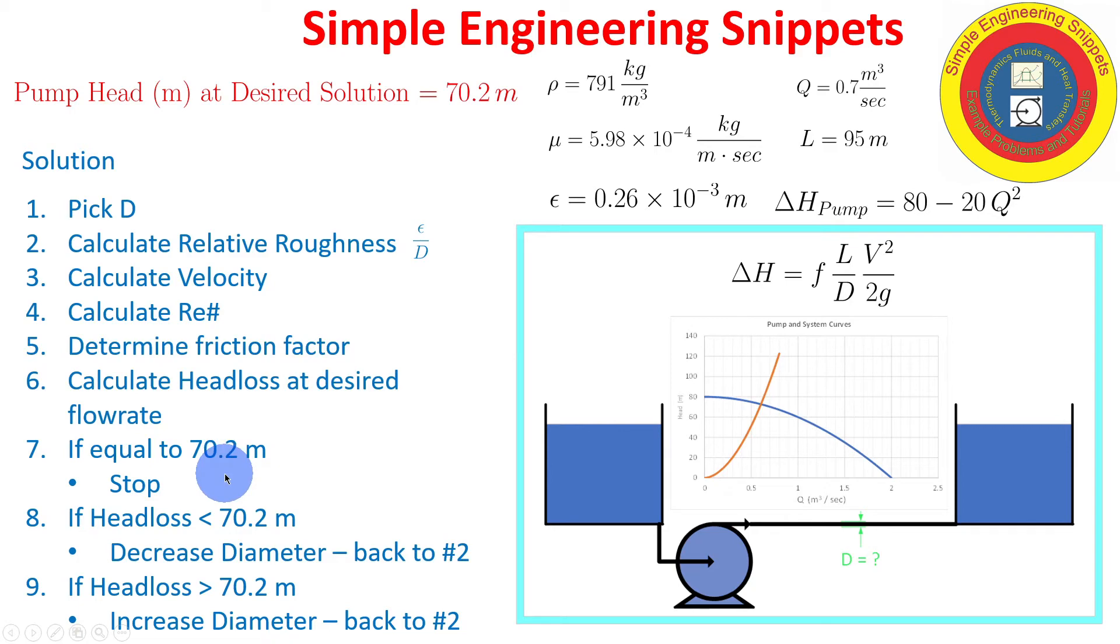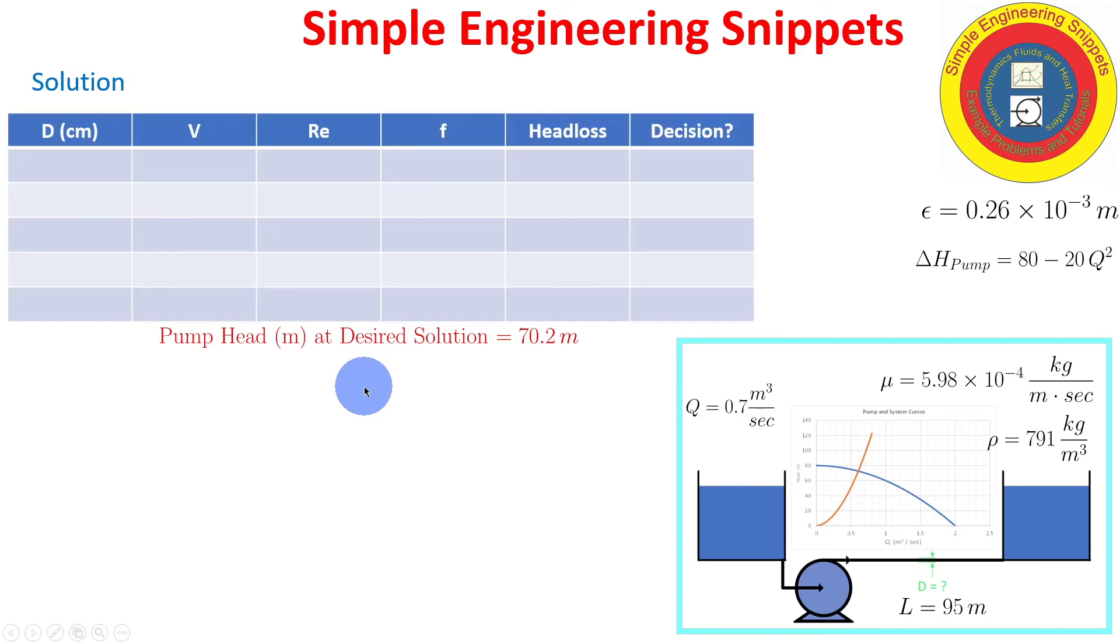You guessed the correct diameter. Way to go. If it's less than 70.2, well that's not terrible because that means our actual solution will be greater than 0.7 cubic meters per second. But that may not be optimal. So we're going to decrease our diameter, go back to number 2 and proceed. If the head loss comes out to be greater than 70.2, well then you're not going to be achieving the desired flow rate. So we're going to have to increase the diameter, go back to number 2, and keep iterating until we get close enough to 70.2. Or in our case, we are limiting ourselves to be working in increments of one centimeter.